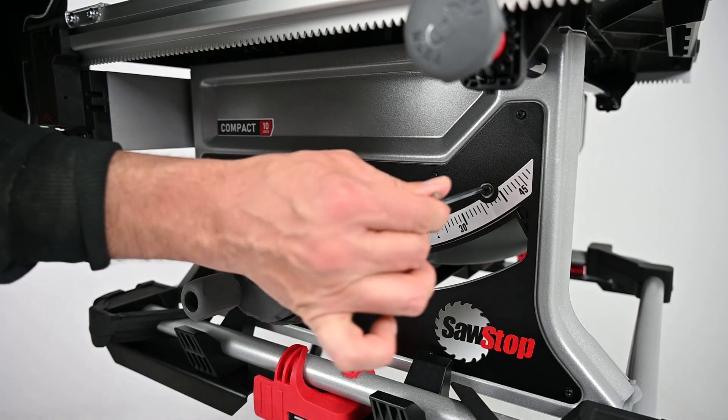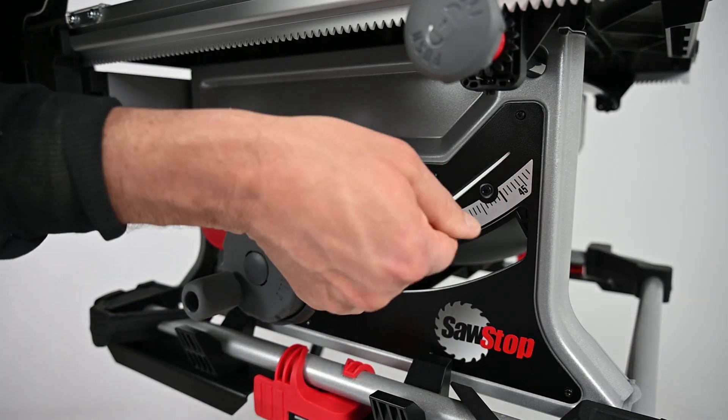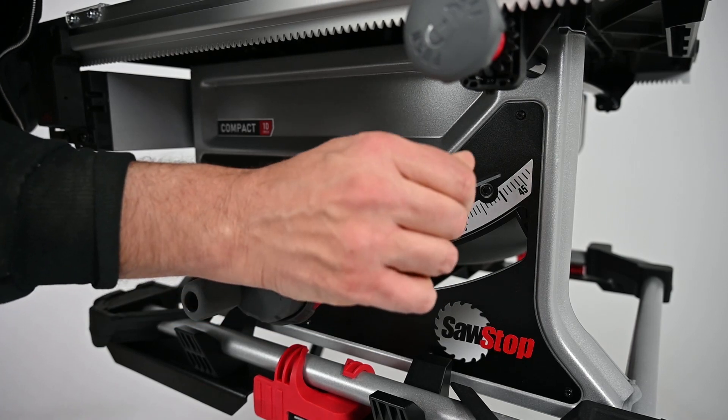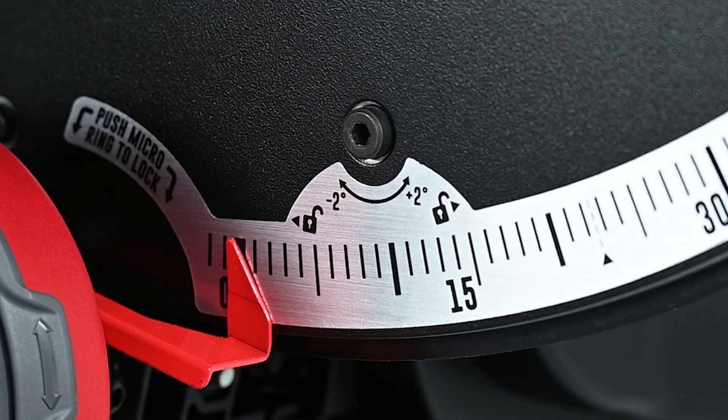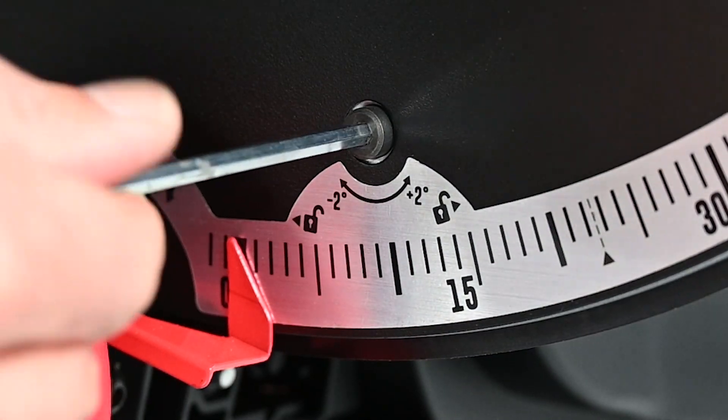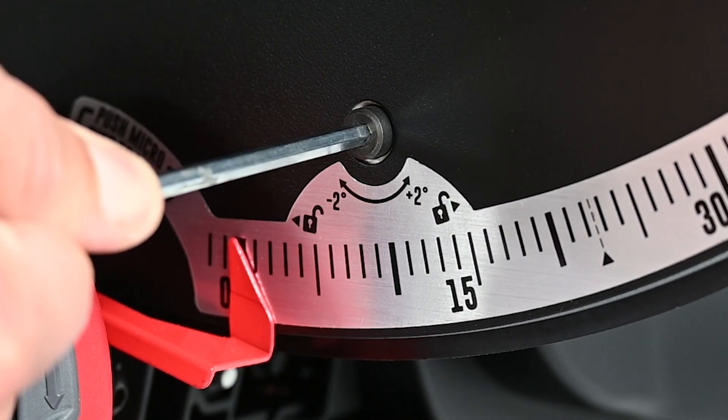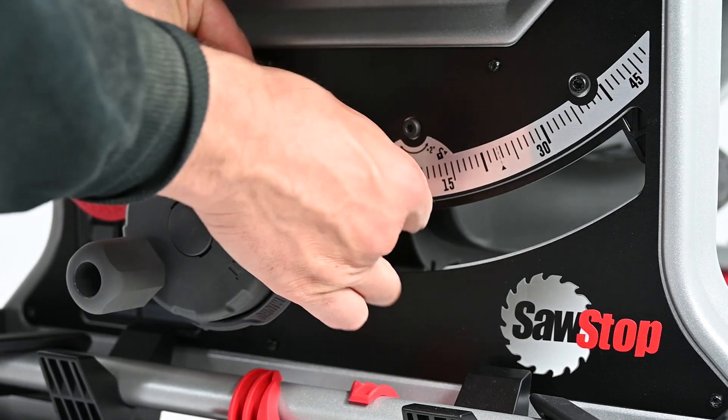use the 4 mm hex key wrench to loosen the two bevel lock nuts. Turn the bevel cam clockwise or counterclockwise as needed, until the blade is flush with the square. Tighten the lock nuts.